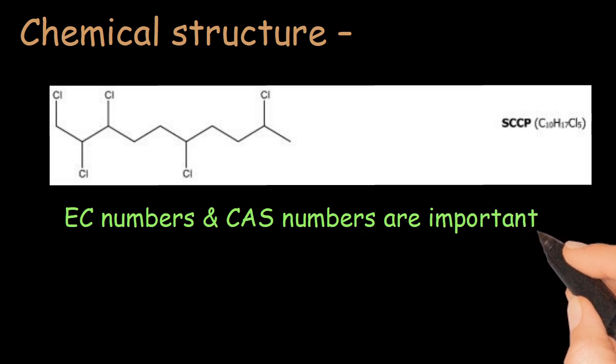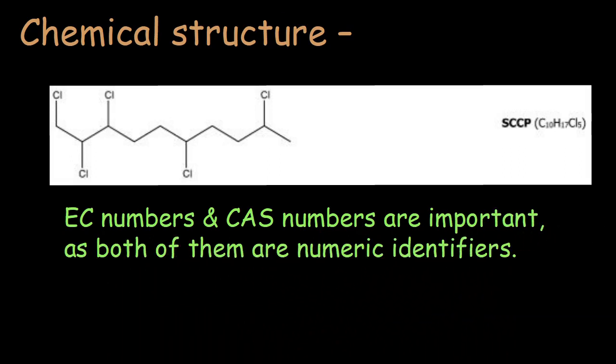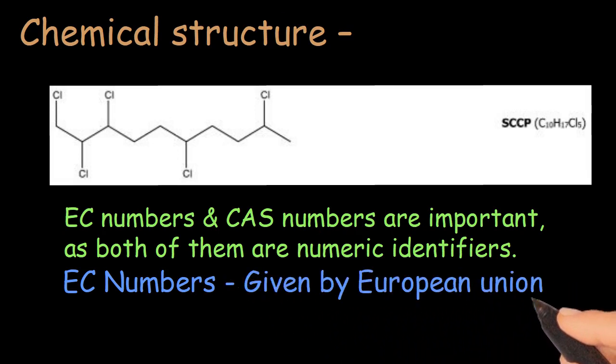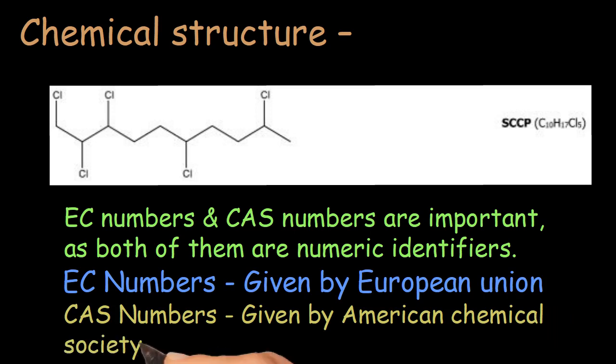EC numbers and CAS numbers are important as both of them are numeric identifiers. EC numbers given by European Union. CAS numbers given by American Chemical Society.